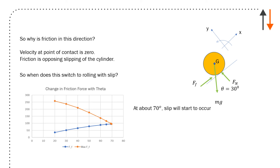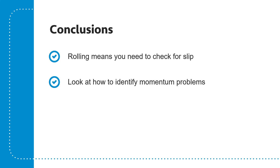A question that often comes up: why is friction in this direction? The velocity at the point of contact is zero, and friction opposes the motion or slipping of the cylinder. The cylinder wants to slip down the ramp, so friction acts up the ramp — that's the correct direction. At about 30 degrees we're below the slip threshold, but as the ramp angle increases, we reach a slip point at about 69.5 degrees. Every time you do rolling questions, you need to check for slip. Crucially, know how to identify momentum problems: look for force, velocity, and time.